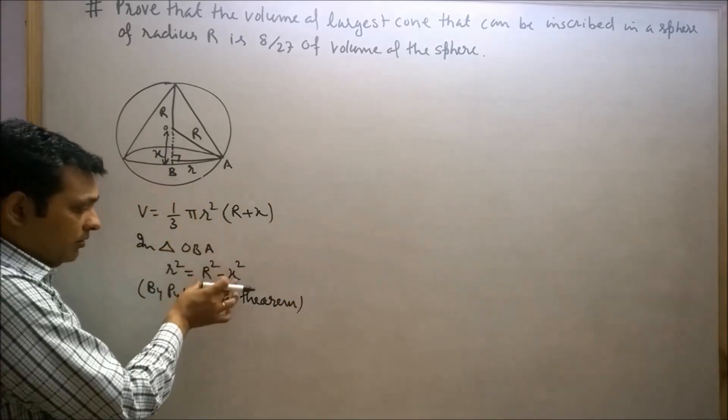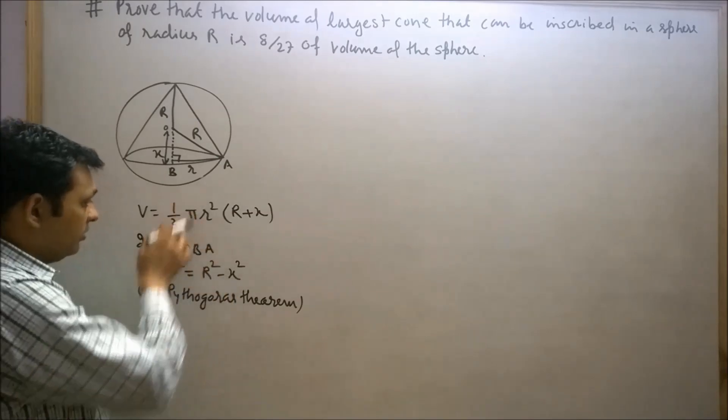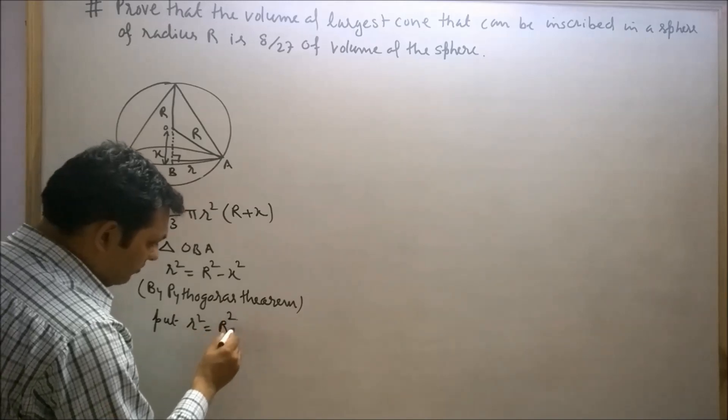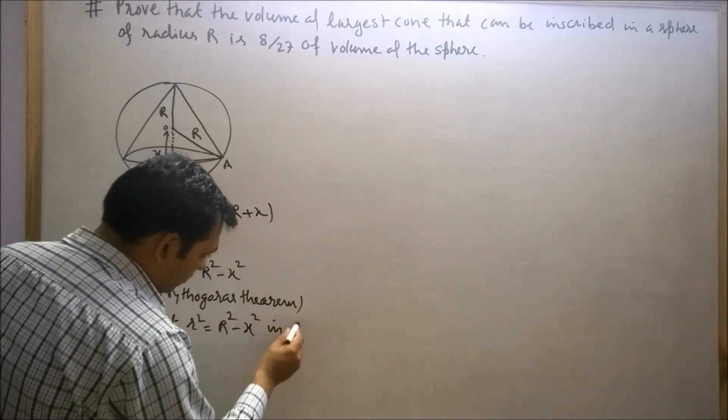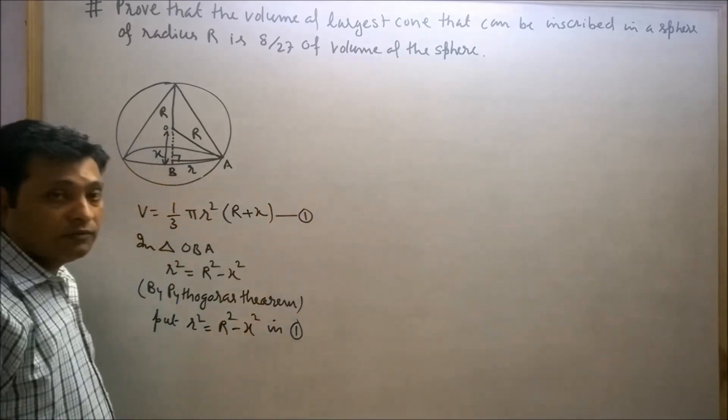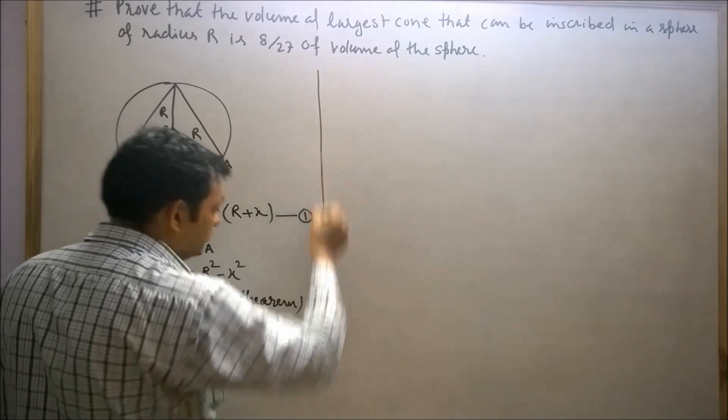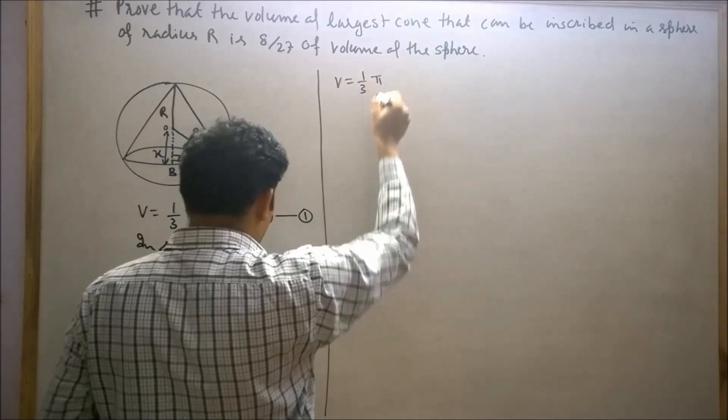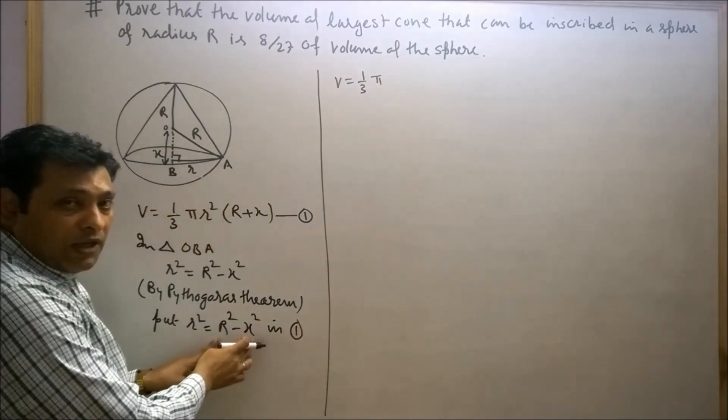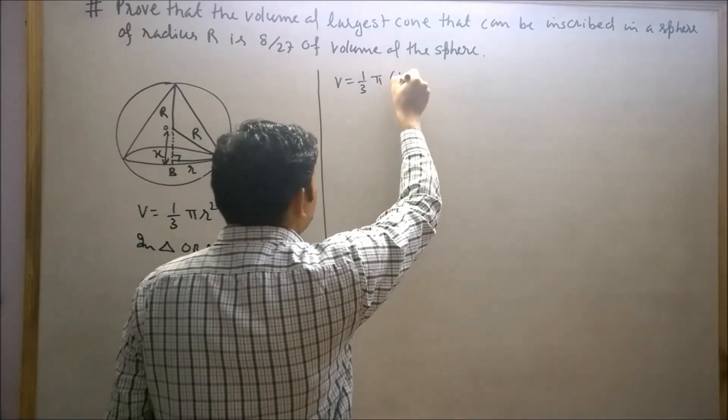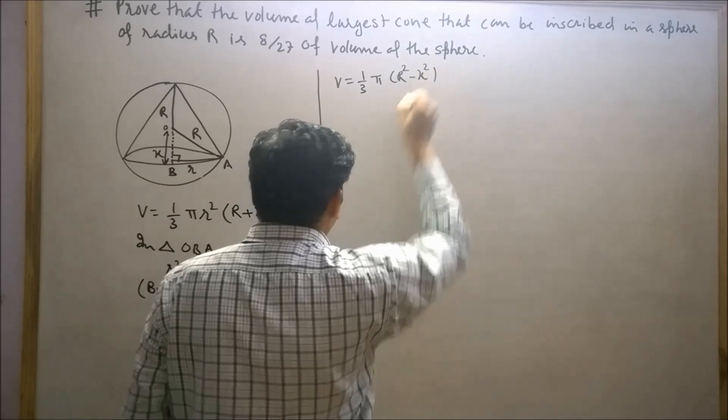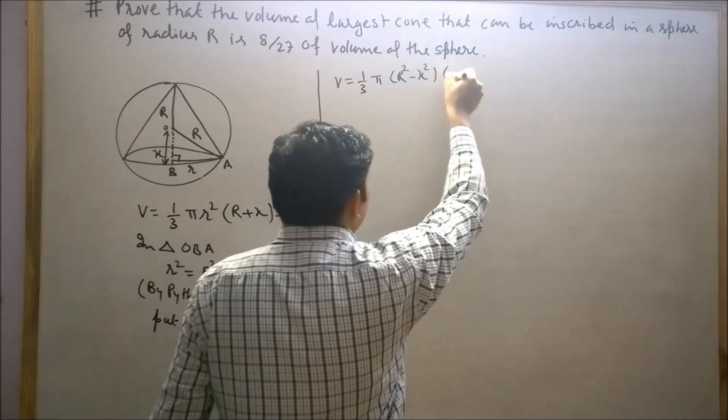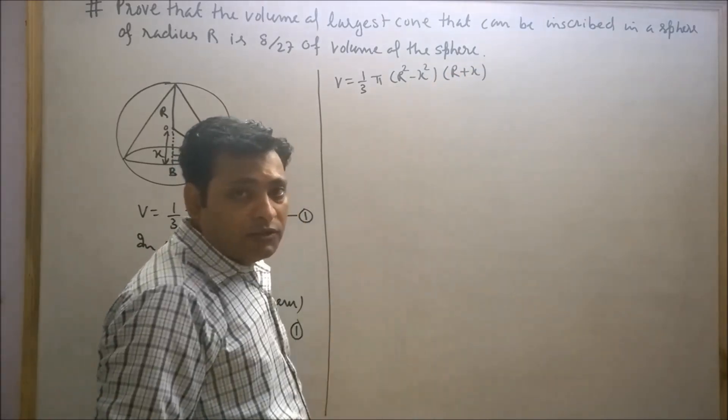Now replace r² by capital R² minus x². So V will equal 1/3 π (R² - x²) times the height of the cone, which is capital R plus x. Here capital R is constant.